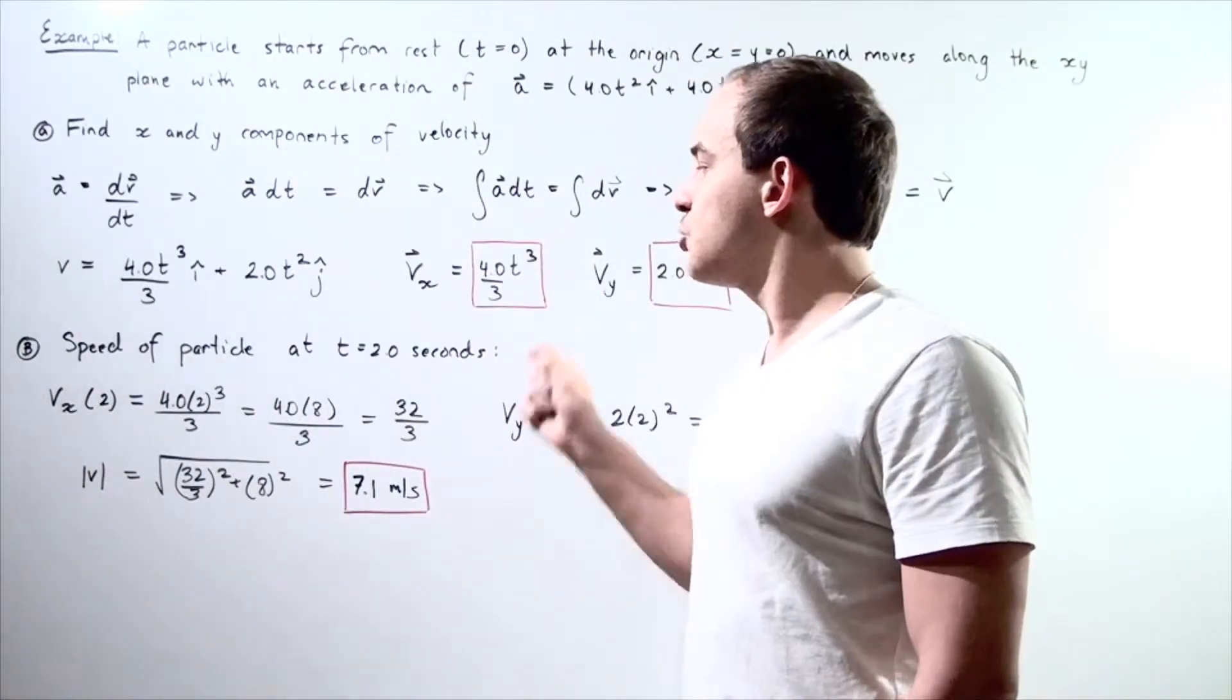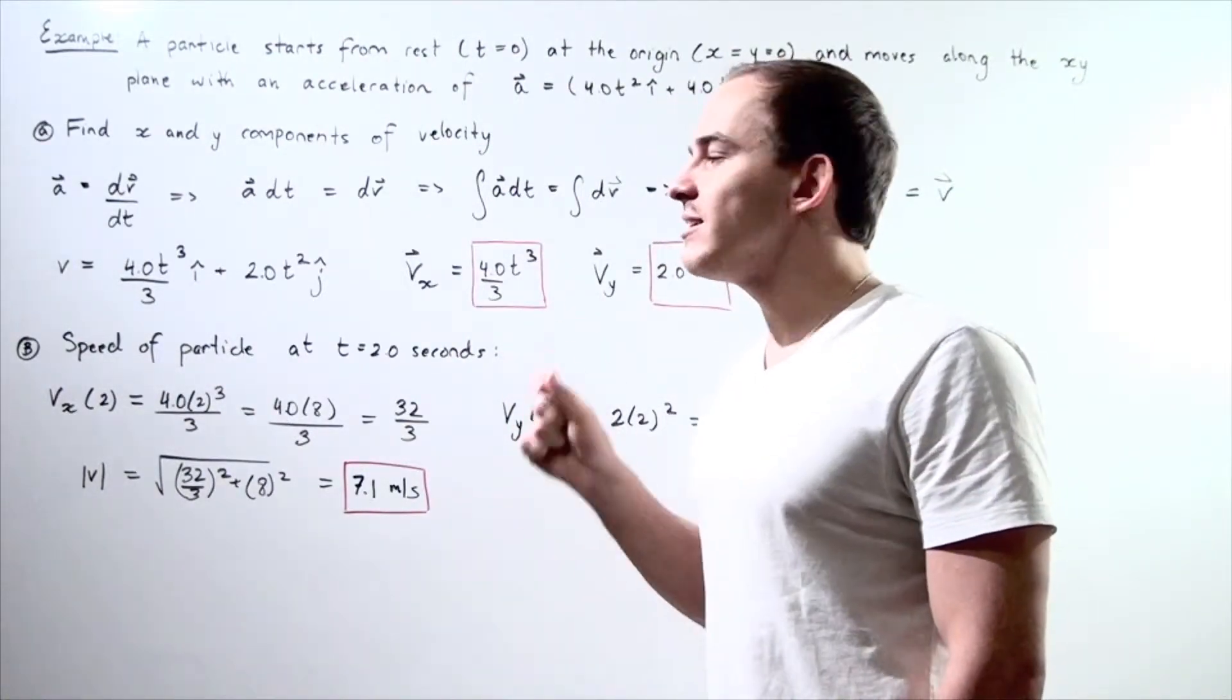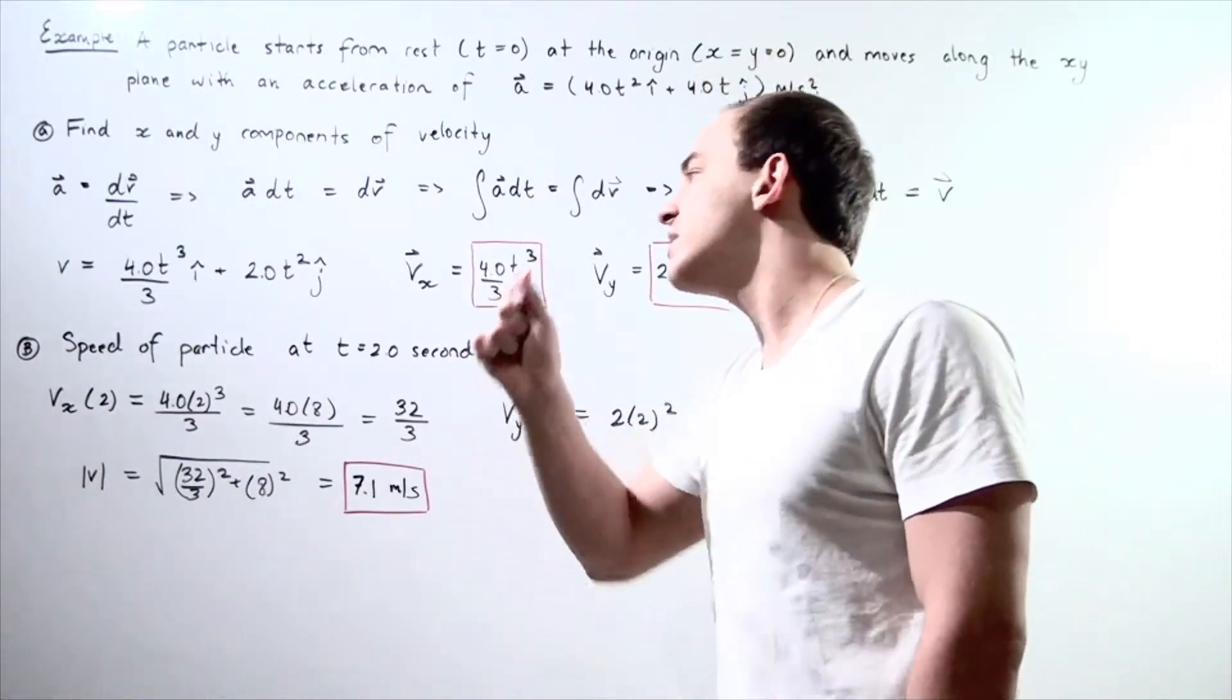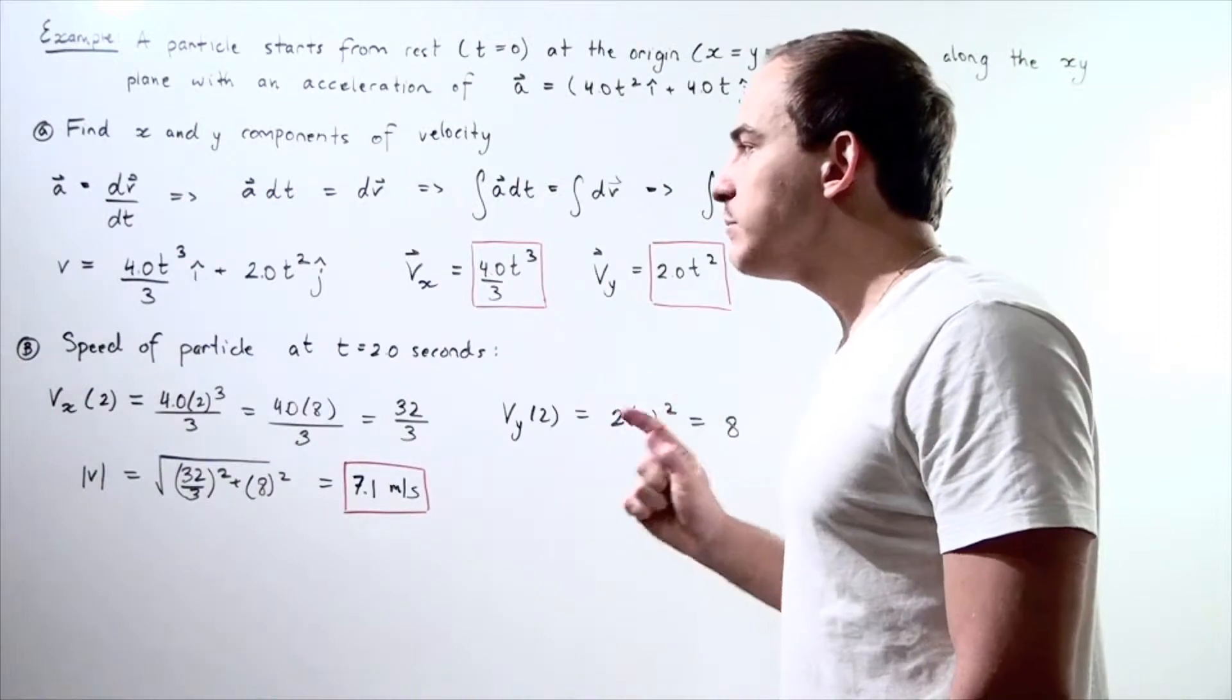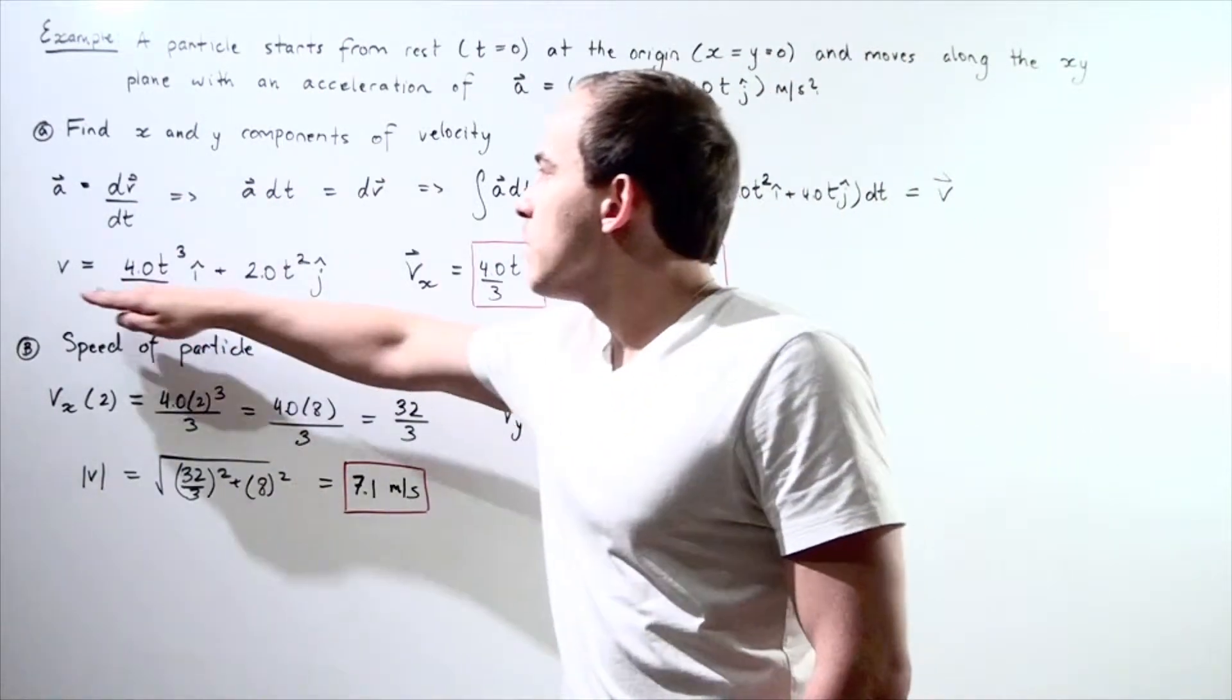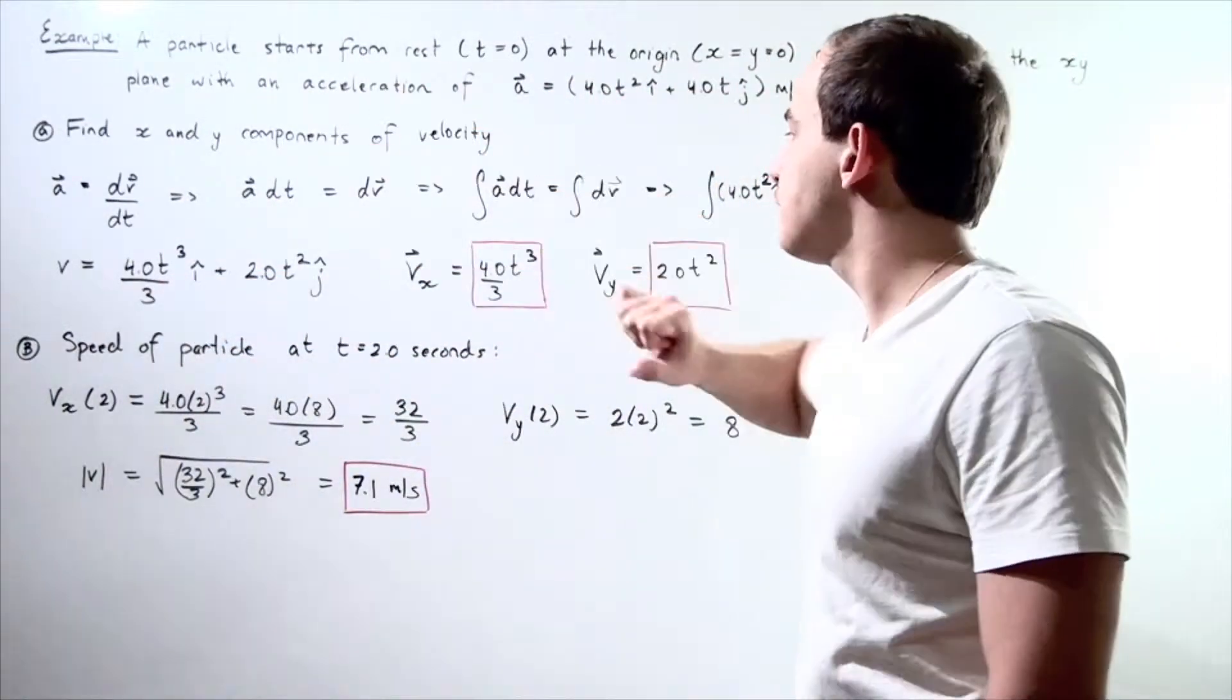In other words, at 2 seconds, what exactly is the magnitude of my velocity vector? I can find what my velocity vector is from the equation we got from part a.